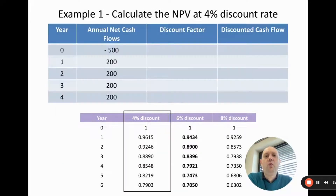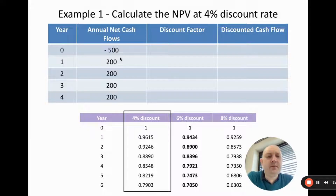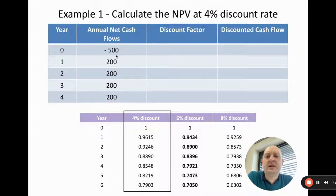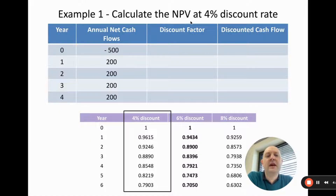Using the same numbers from the previous video: the project runs four years, the investment is 500, and then we get 200 per year. A question might ask: calculate the NPV — net present value — at a 4% discount rate.